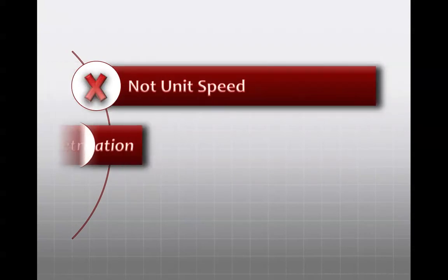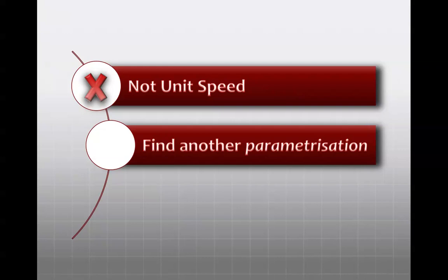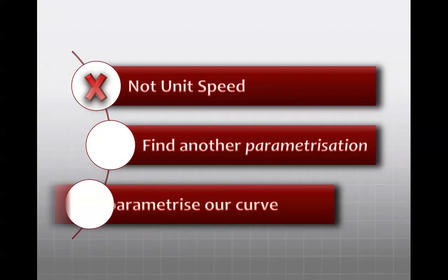Now, if we want to make it unit speed, we could try and find another parametrisation, and the way that we can do that is to reparameterise the curve that we've already got.